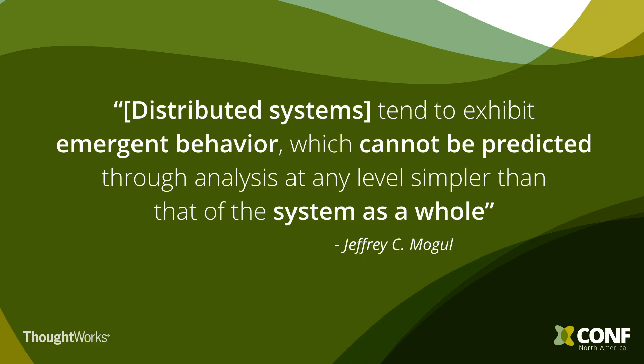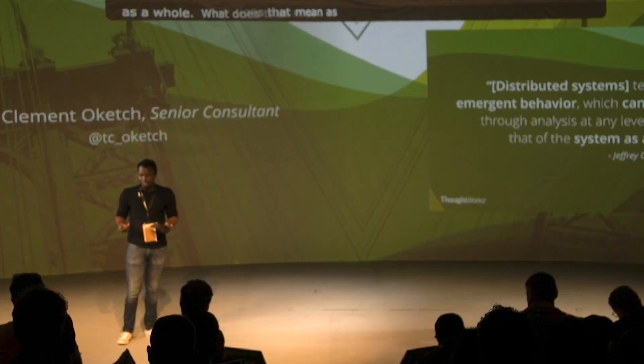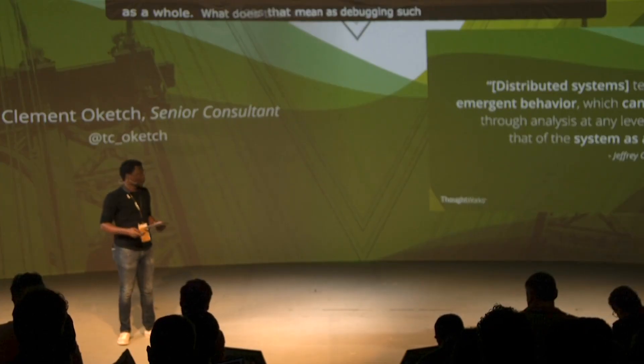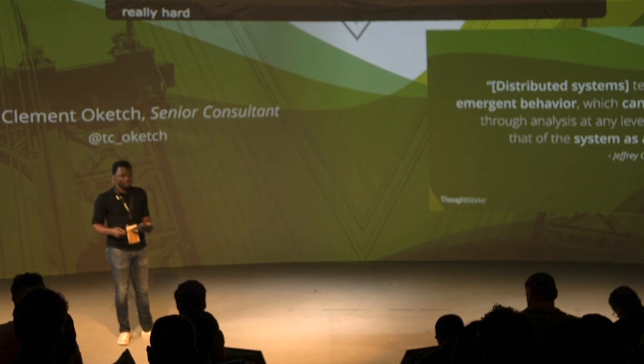Microservices, like any other distributed systems, are prone to failure, and in fact they tend to fail in new and spectacular ways that just require human intervention to decipher. This shouldn't be too surprising, because to quote some of the research around complex software systems, distributed systems tend to exhibit emergent behavior which cannot be predicted through analysis at any level simpler than that of the system as a whole. So what does this mean for debugging such systems? Frankly, it's really, really hard — but I believe there are three things we can do to make our lives easier.